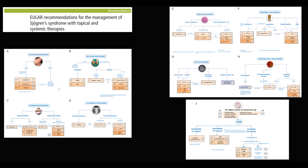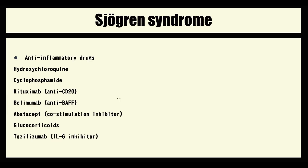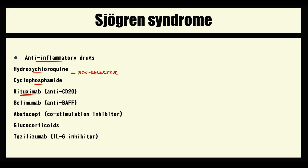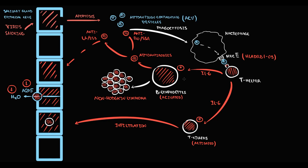For systemic manifestations of Sjögren's syndrome we use strong anti-inflammatory agents. Among these we have non-selective drugs such as hydroxychloroquine and cyclophosphamide, which act on multiple steps in the pathogenesis. The first selective agent is rituximab, which acts on the CD20 receptor on B lymphocytes and induces apoptosis — it is an anti-CD20 antibody. With a decreasing amount of B lymphocytes, antibody production decreases and the severity of damage decreases. The next agent is belimumab, which binds to the BAFF receptor on B lymphocytes and also induces apoptosis, decreasing autoantibody production and injury severity.